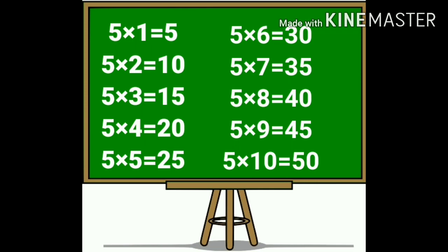Again: five ones are five. Five twos are ten. Five threes are fifteen. Five fours are twenty. Five fives are twenty-five. Five sixes are thirty. Five sevens are thirty-five. Five eights are forty. Five nines are forty-five. Five tens are fifty.